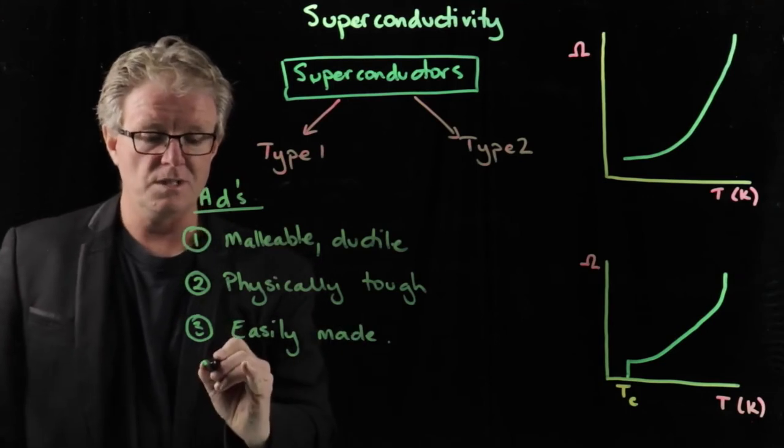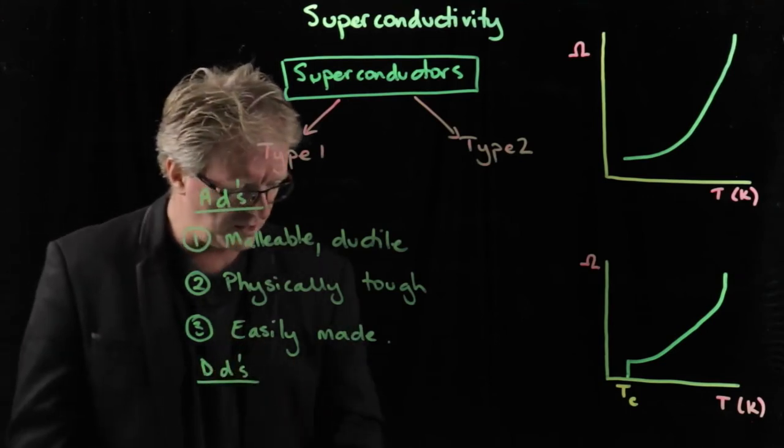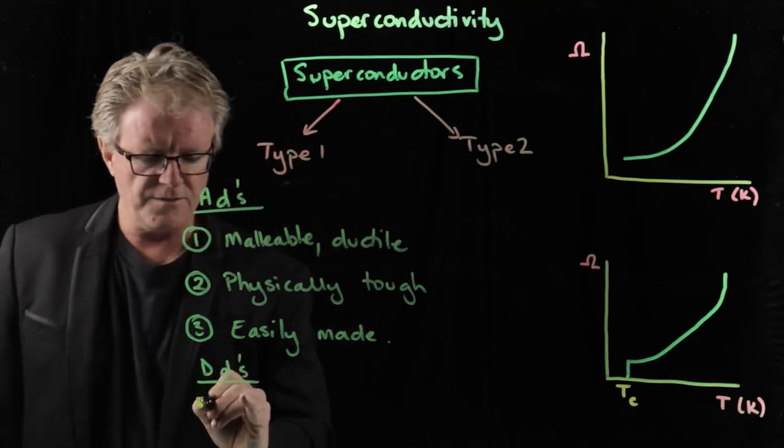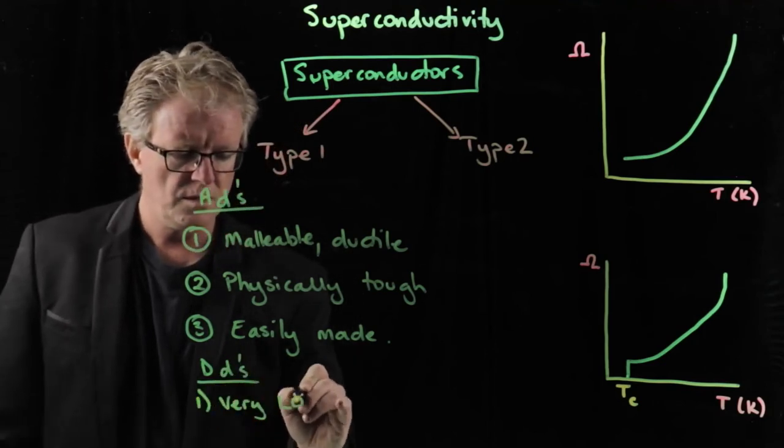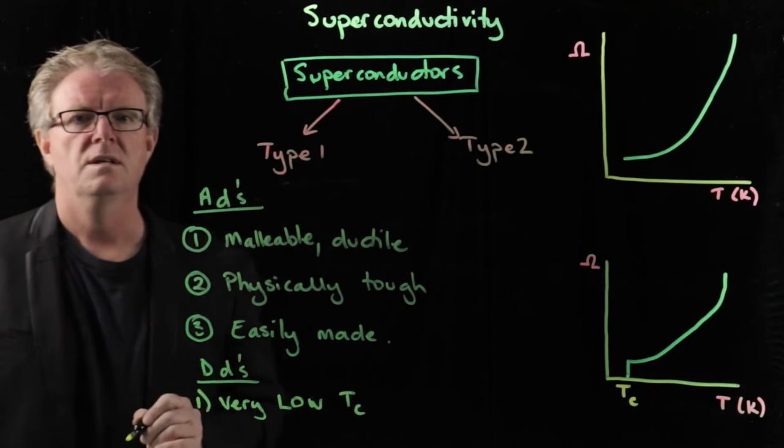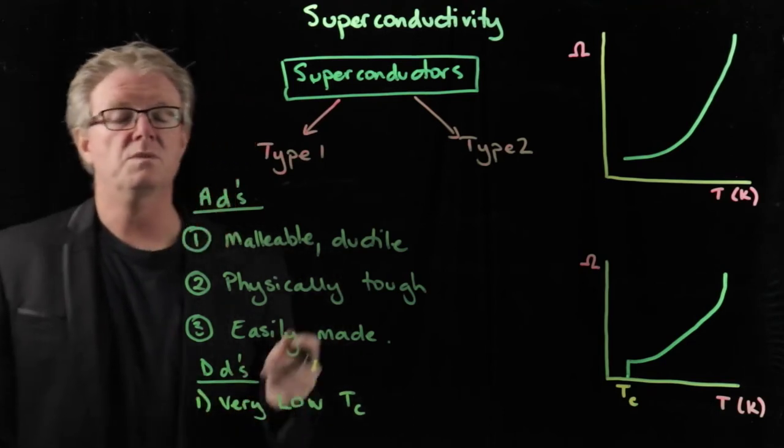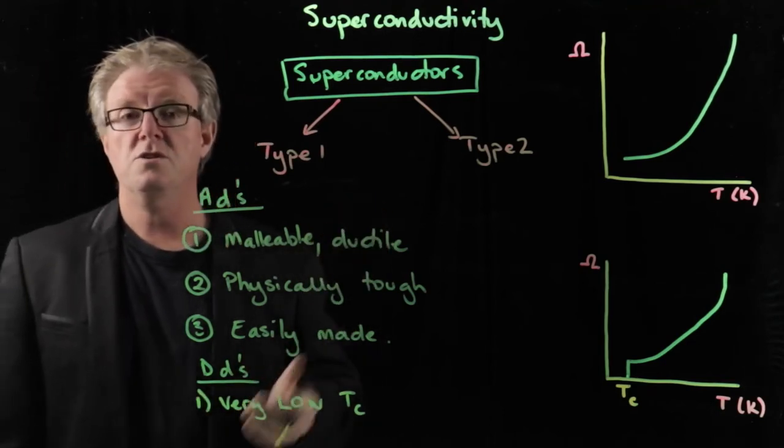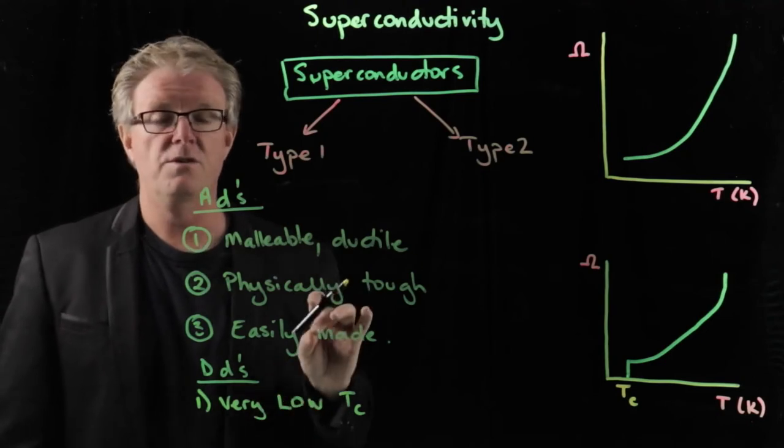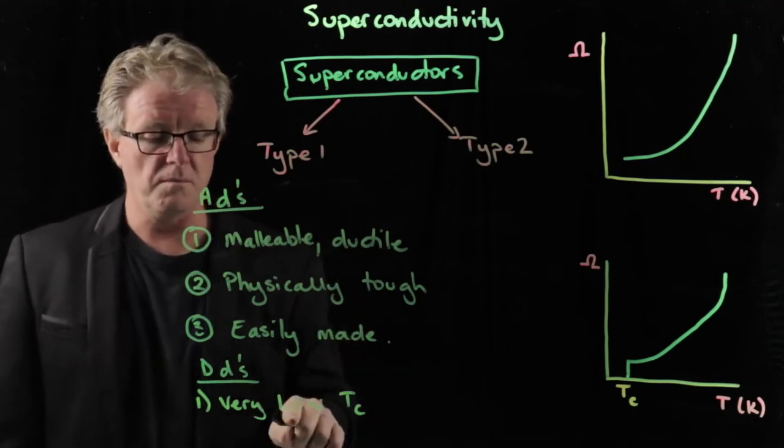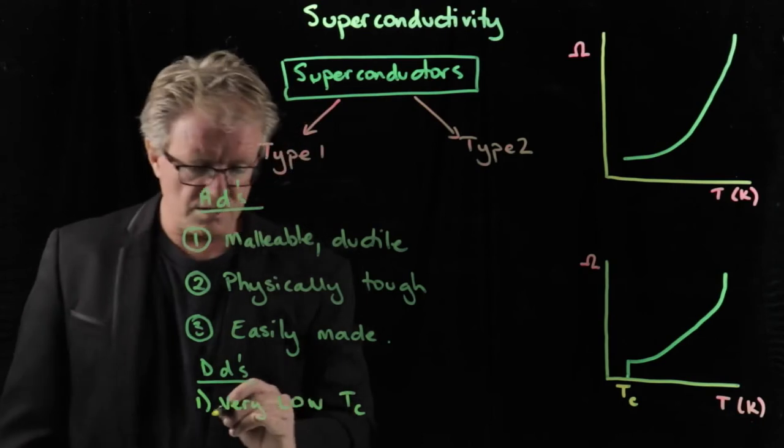Disadvantages, as we said before. They have very low critical temperatures. So to get down to the critical temperatures, we said before that we need to use liquid helium, very, very expensive, very, very cold. Not very practical. Major disadvantage. The second disadvantage is we need liquid helium.